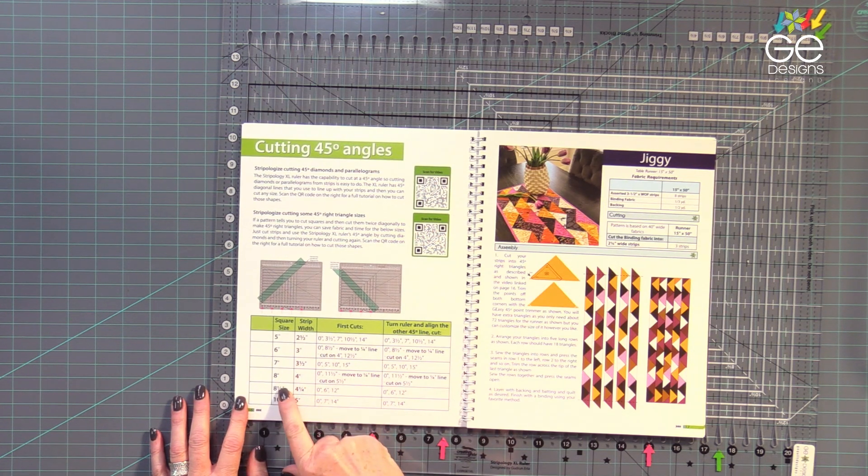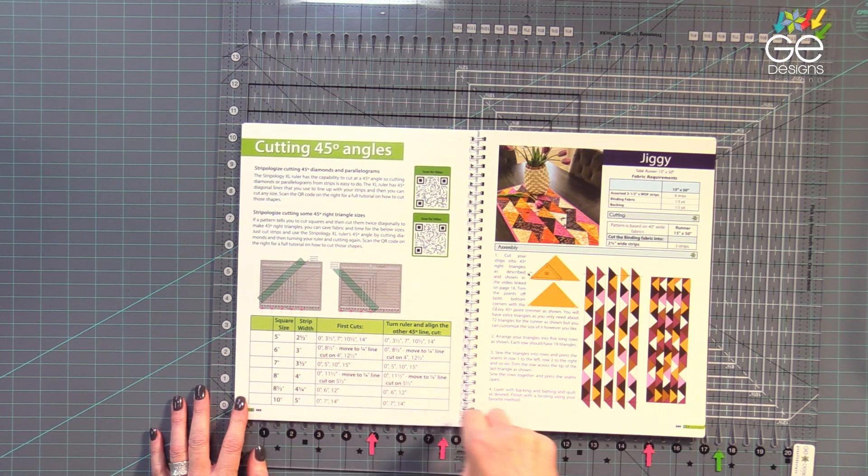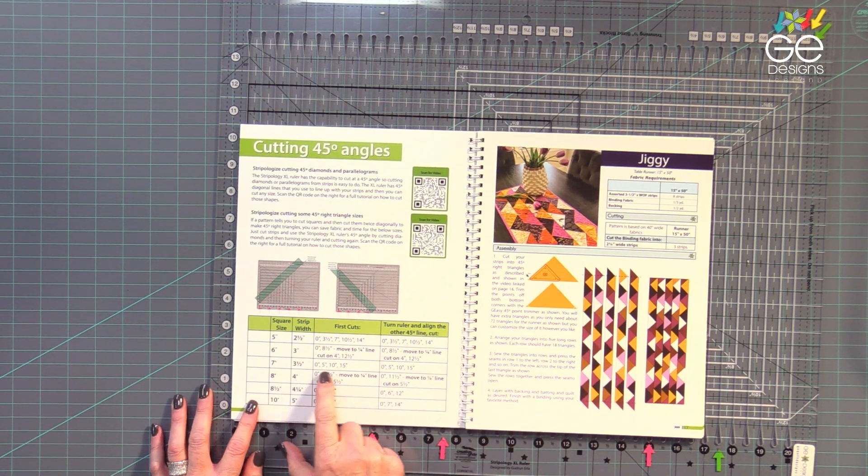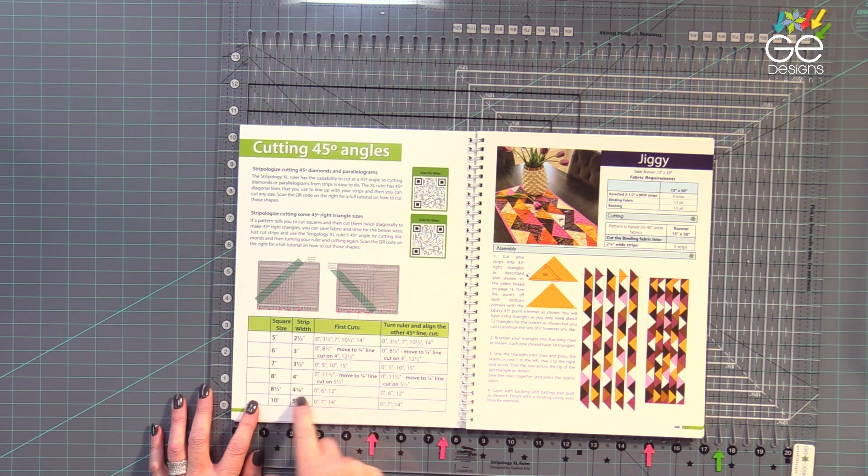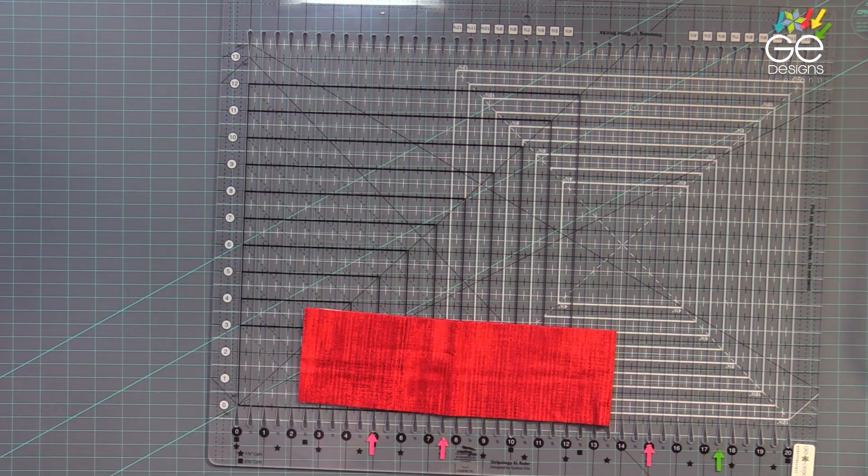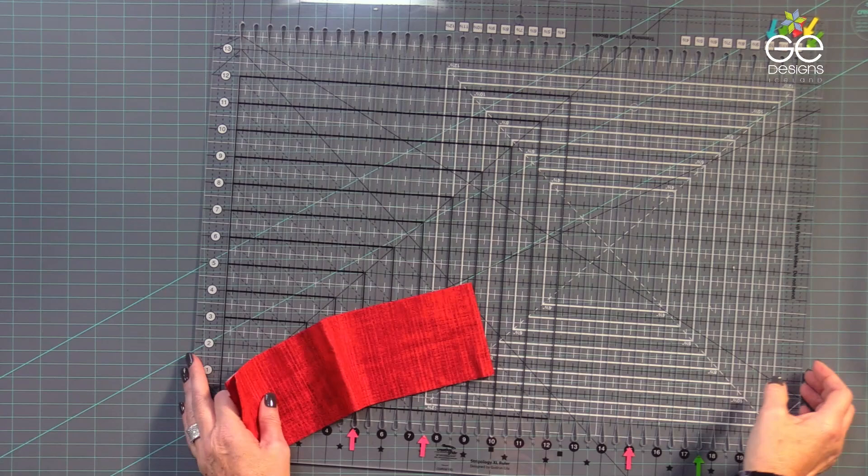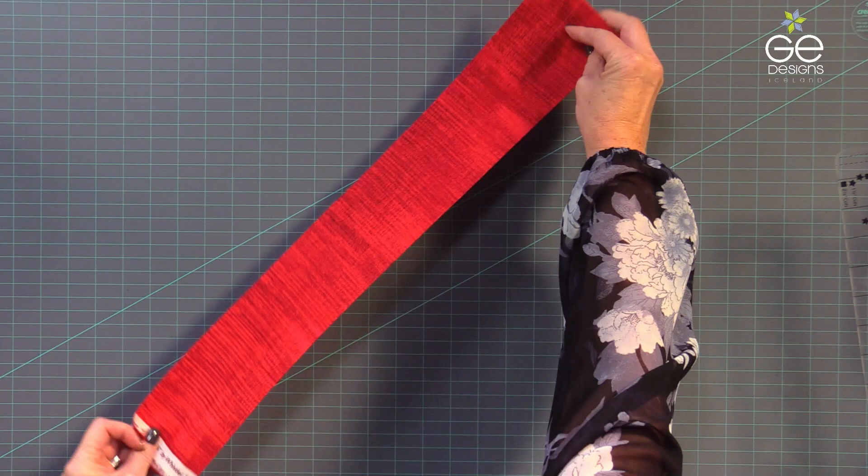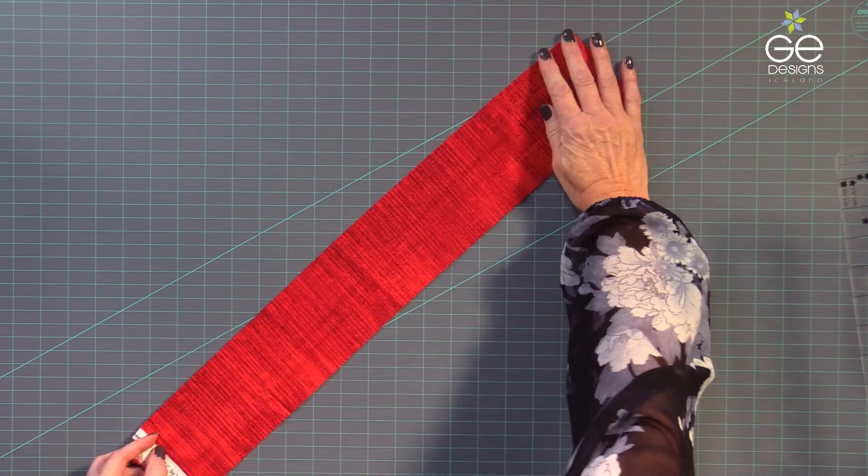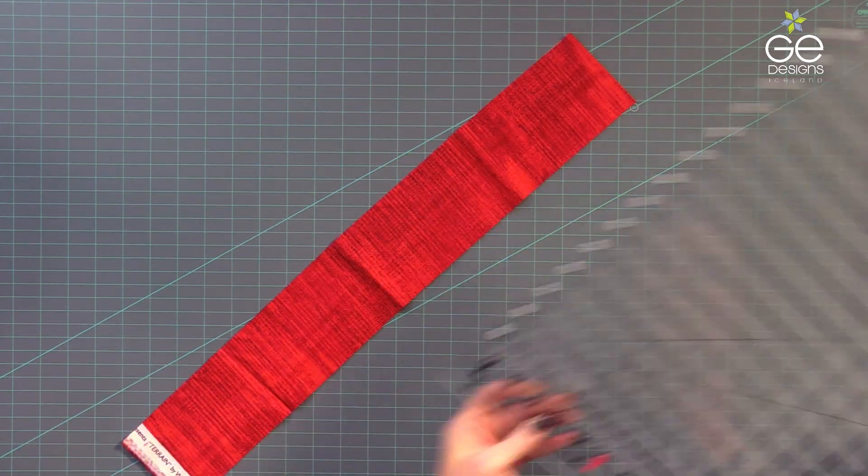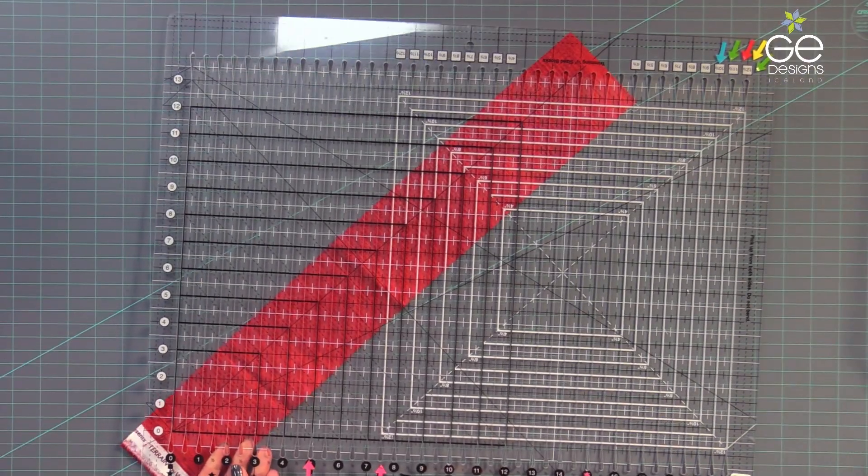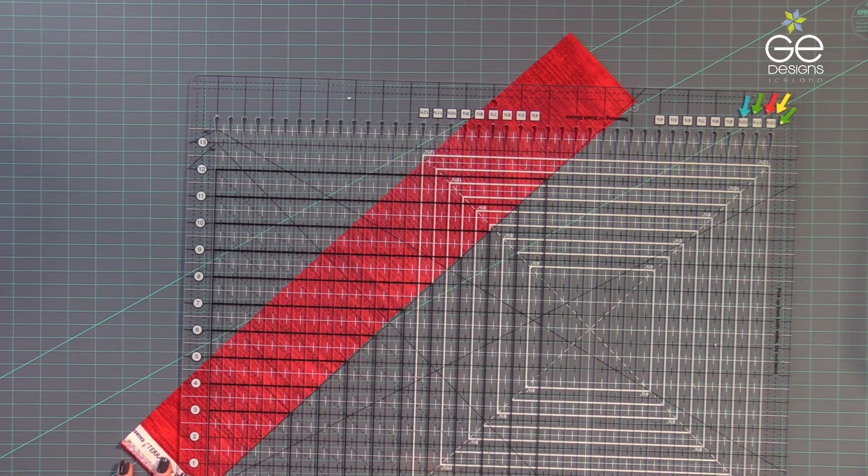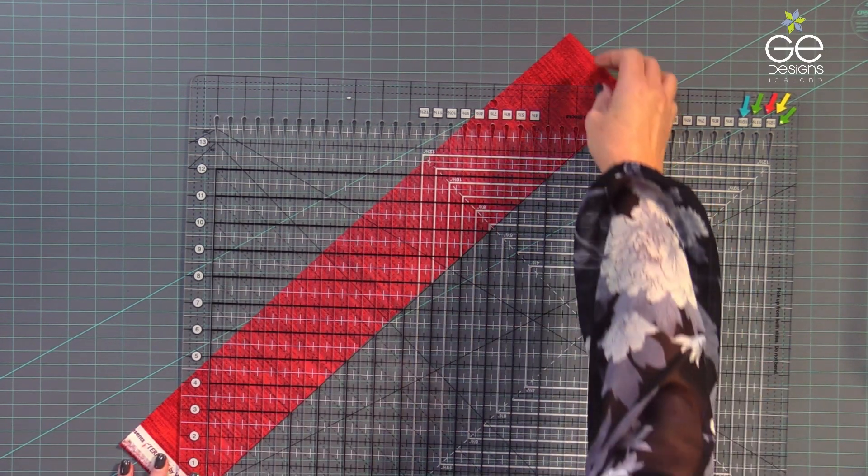In a pattern, sometimes you are told to cut a square and then cut it twice so that you have those right triangles. There is a way to stripologize that and use strips. Let me show you. I have a 3½ inch wide strip here that I am going to lay at an angle, following that 45-degree line on the ruler. I'm going to align the 45-degree line on the ruler along the bottom of the strip.